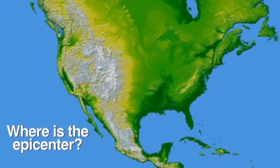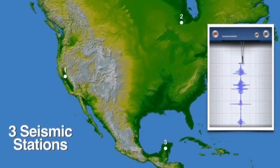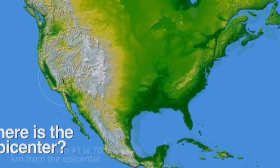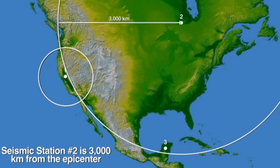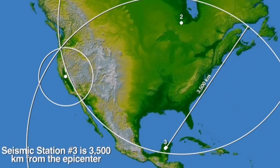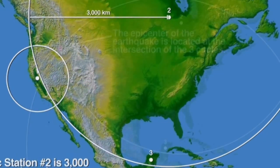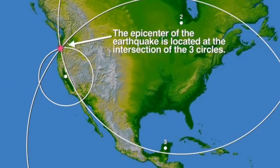Now, let's have another example. You can find it in your module. Where is the epicenter? We have three seismic stations: one, two, and three. The first seismic station records the distance of the earthquake, 700 kilometers. The second seismic station records the distance of 3,000 kilometers. And the third seismic station records 3,500. The epicenter of the earthquake is located at the intersection of the three circles. That is how we determine the epicenter of an earthquake.